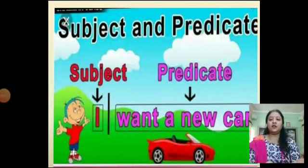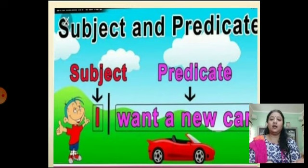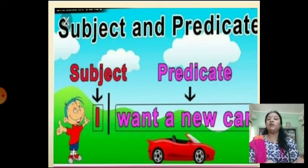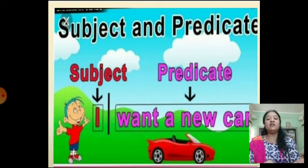Namaste students, today we are going to start off with a new topic which is related to sentences. A sentence is a group of words which makes complete sense, and sentences are of four kinds. First is assertive, that is a statement. Second is interrogative, which is questions. Third is imperative, which is an order or a request. And fourth is exclamatory, which shows expressions of sorrow, relief, or pain.